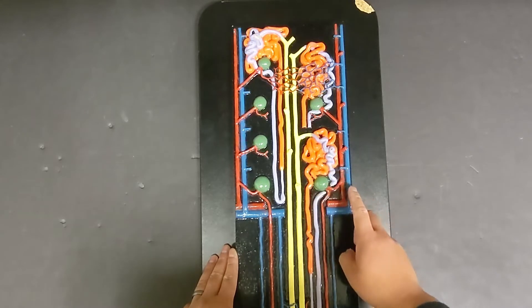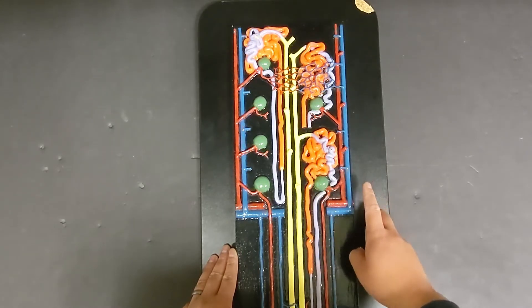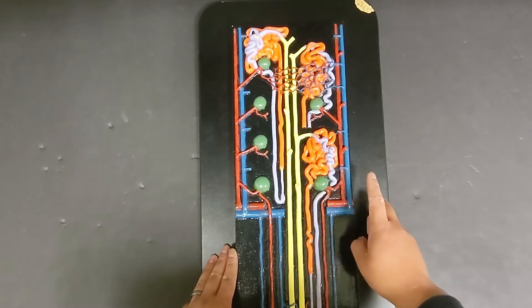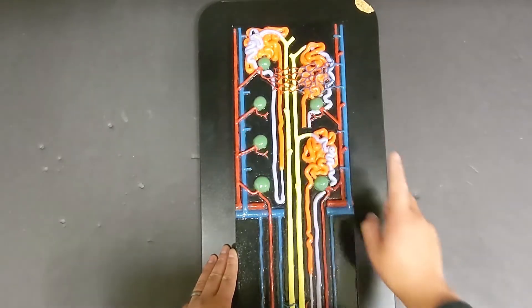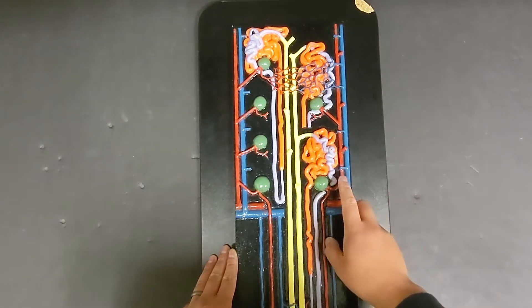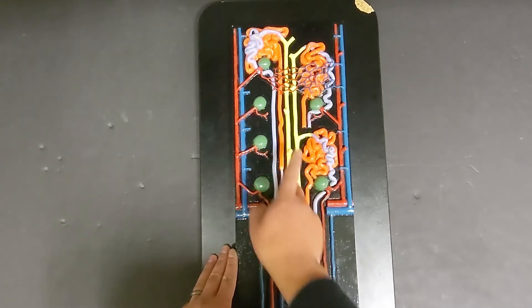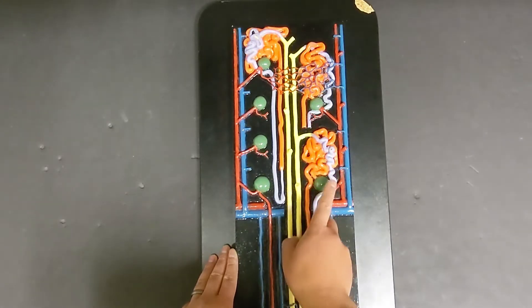These two tubes are called the proximal and distal convoluted tubules. But the question that you need to ask yourself is, how do you know which one is which? So if you look at any of these given Bowman's capsules, you can see that the orange tube is directly connected to it. So here, here, and then here as well. These proximal convoluted tubules are attached to the Bowman's capsules.